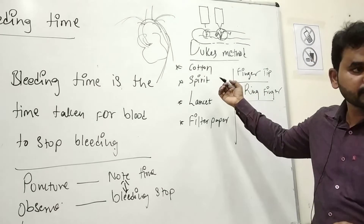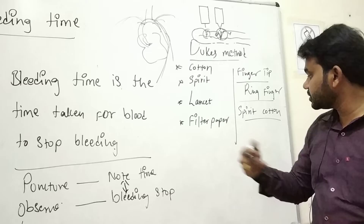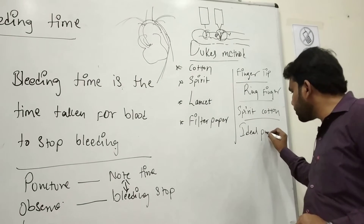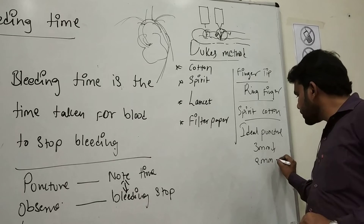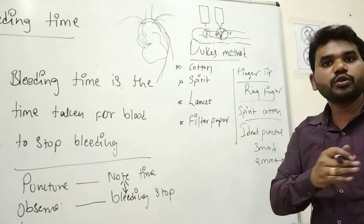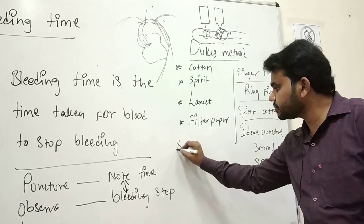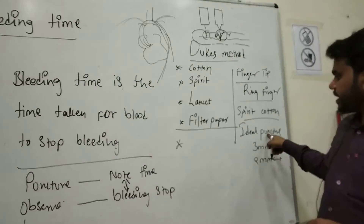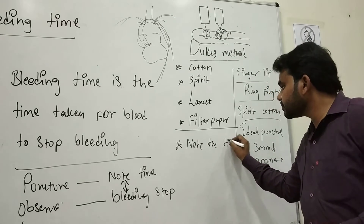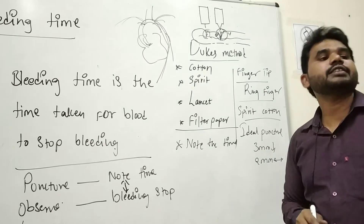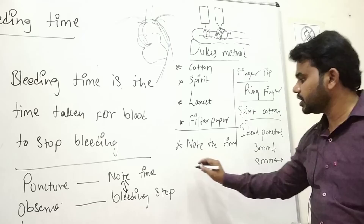So the ring finger has a direct connection of the blood vessel from the heart. Now, how to clean the ring finger? Clean the fingertip with spirit. Then make an ideal puncture — which should be 3mm deep and 2mm width. After making the ideal puncture, the next step immediately is to note the time. If you delay noting the time, the value can decrease or increase and you won't get a proper result.